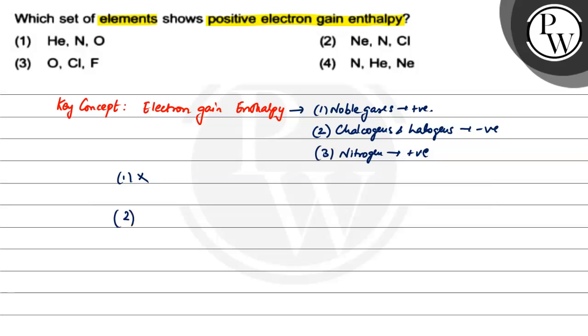Option 2, we have neon, nitrogen and chlorine. Since we have fluorine, chlorine has negative electron gain enthalpy. That's why this is not the correct option.